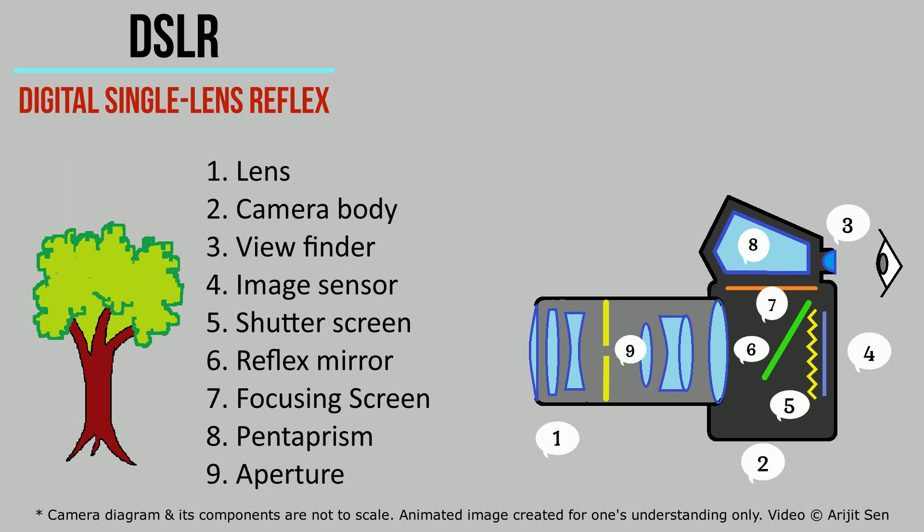Next is the camera body, which houses a lot of parts. The viewfinder or eyepiece is through which you are actually looking to capture the image. Next is the sensor, which processes the image once light rays fall on it. The shutter screen opens up once you press the shutter button, allowing light to fall on the sensor. The reflex mirror reflects the light upwards into the pentaprism.